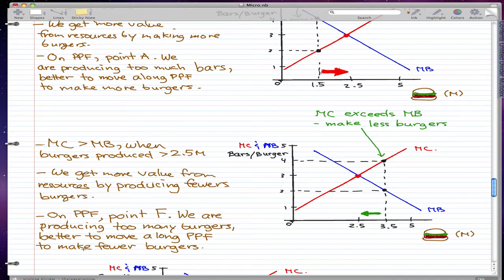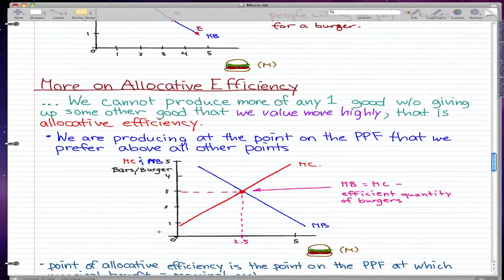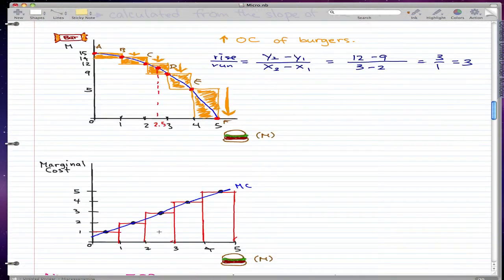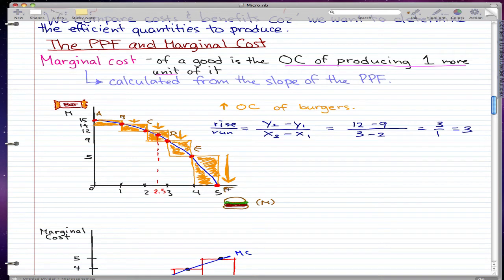And so we get more value from resources by producing fewer burgers. So on the PPF, when we look at point F, we are producing too many burgers, better to move along PPF to make fewer burgers. Let's just go back to our graph and see how that looks like. So this is point F. All we're creating is burgers, we're not even making any bars. In this situation, marginal cost will exceed marginal benefit. And it's better for us to move back up along the PPF curve.